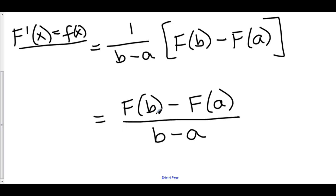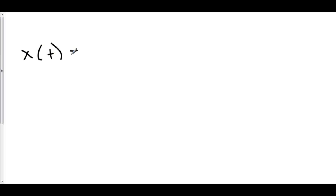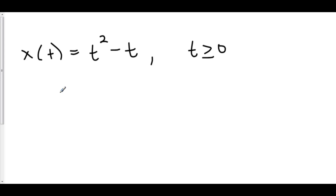In order to investigate this further, let's consider some physics. Let's create a position function x of t as t squared minus t, such that t is greater than or equal to zero. Now if I asked you to find the average rate of change of the position, then you'd be finding the average velocity from zero to wherever I tell you. So let's find the average velocity from zero to three.